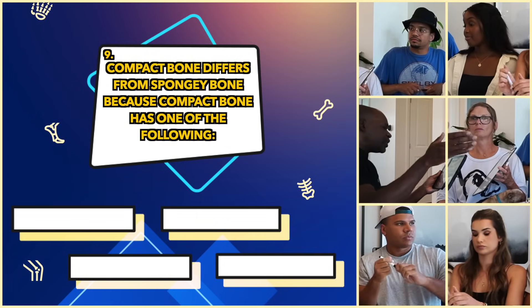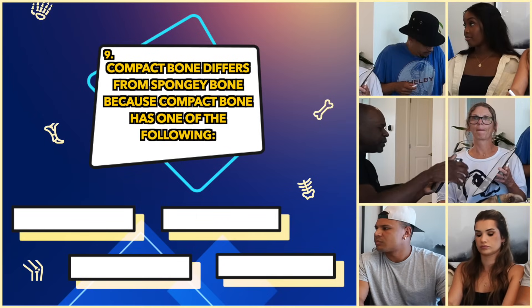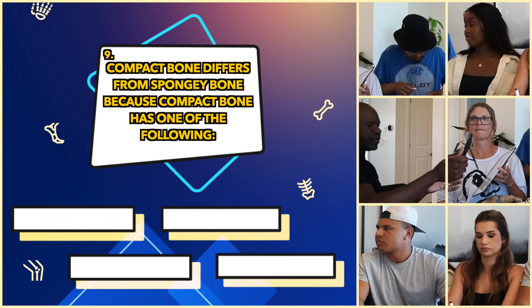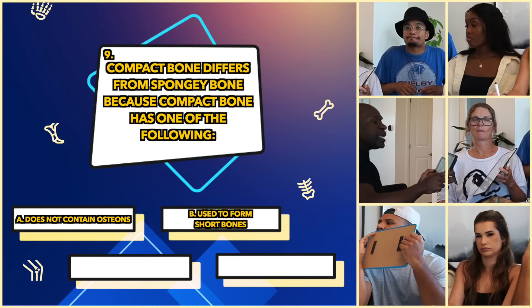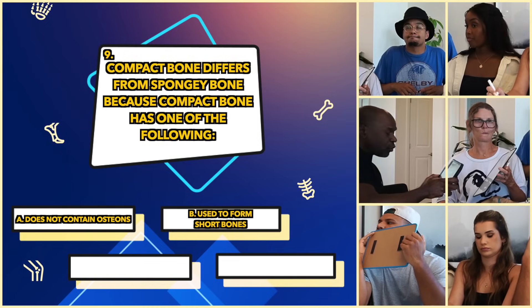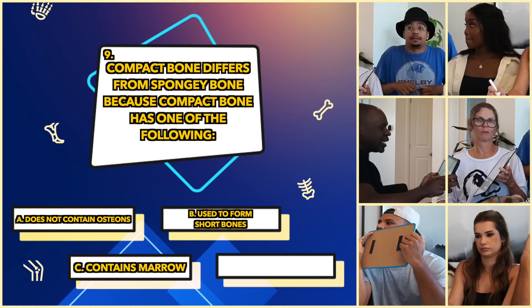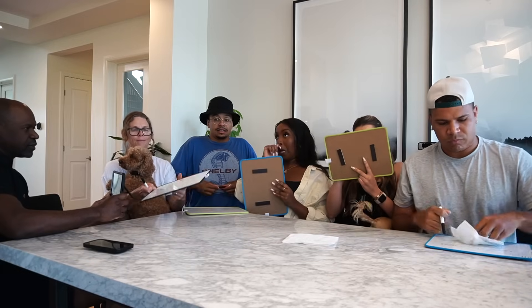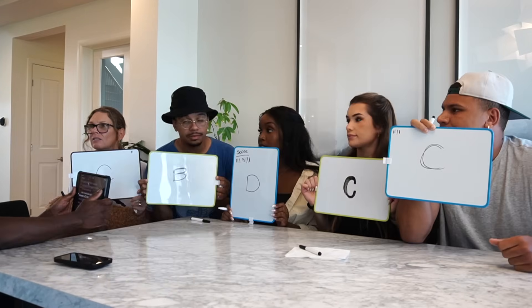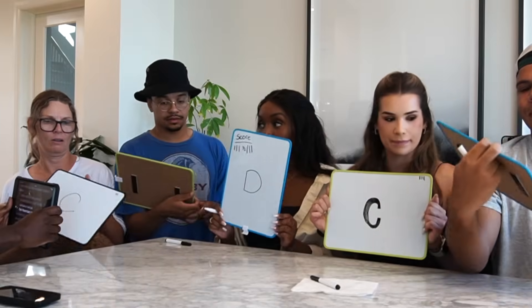Compact bone differs from spongy or cancellous bone because compact bone: A, does not contain osteons; B, is used to form short bones; C, contains marrow; or D, has Haversian canals. That is a hard question. The answer is D — has Haversian canals. No one knows what that is.